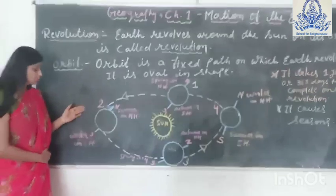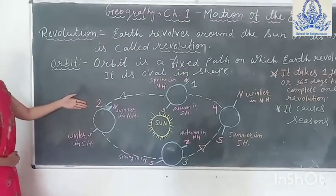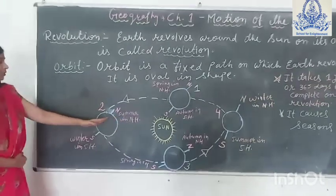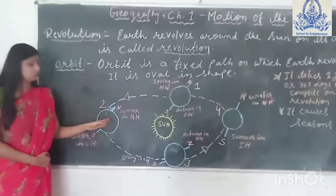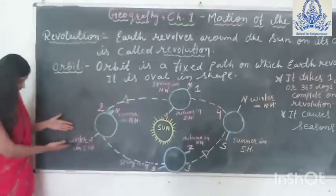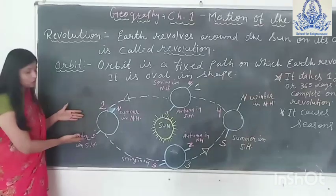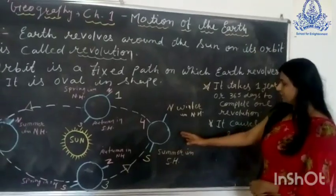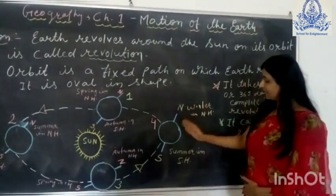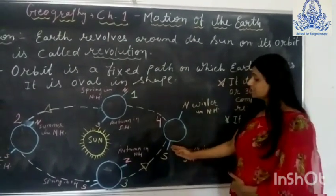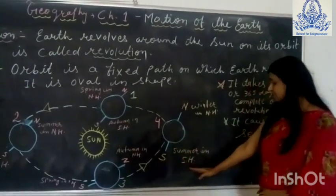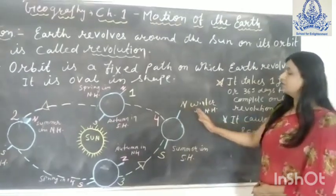First of all, we will talk about position 2. In position 2, you can see the North Pole is leaning towards the sun, so the northern hemisphere is getting more sunlight and has summer season. The southern hemisphere is far away from the sun so it gets less sunlight. In position 4, the North Pole is far away from the sunlight and the South Pole is towards the sunlight, so the southern hemisphere has summer season and the northern hemisphere has winter season.